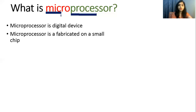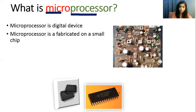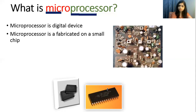Microprocessor is fabricated on a small chip. It consists of thousands of electronic components — registers, capacitors, inductors, diodes. When a large electronic circuit is integrated into one compact IC, it is called an integrated circuit. So the microprocessor is fabricated from thousands or even lakhs of electronic components integrated into a small chip — a small chip known as an integrated circuit, or IC. That is why it is called 'micro' — because it is very small compared to discrete circuits.